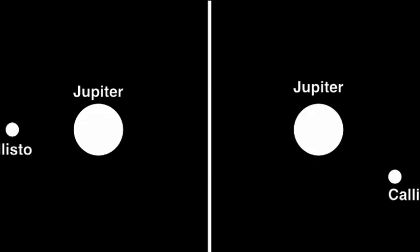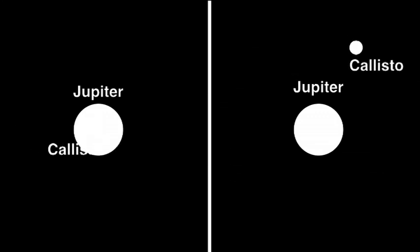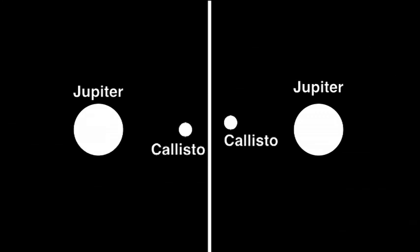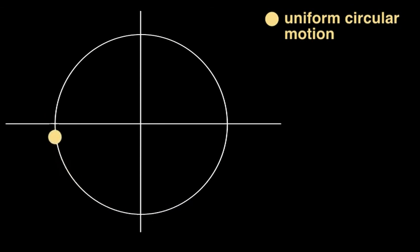What we really see here is in fact the projection of a circular motion on one of its diameters. In other words, Galileo's side view of Callisto's circular motion closely resembles simple harmonic motion. There is a remarkable connection between simple harmonic motion and circular motion. Simple harmonic motion is the projection of uniform circular motion on one of its diameters.